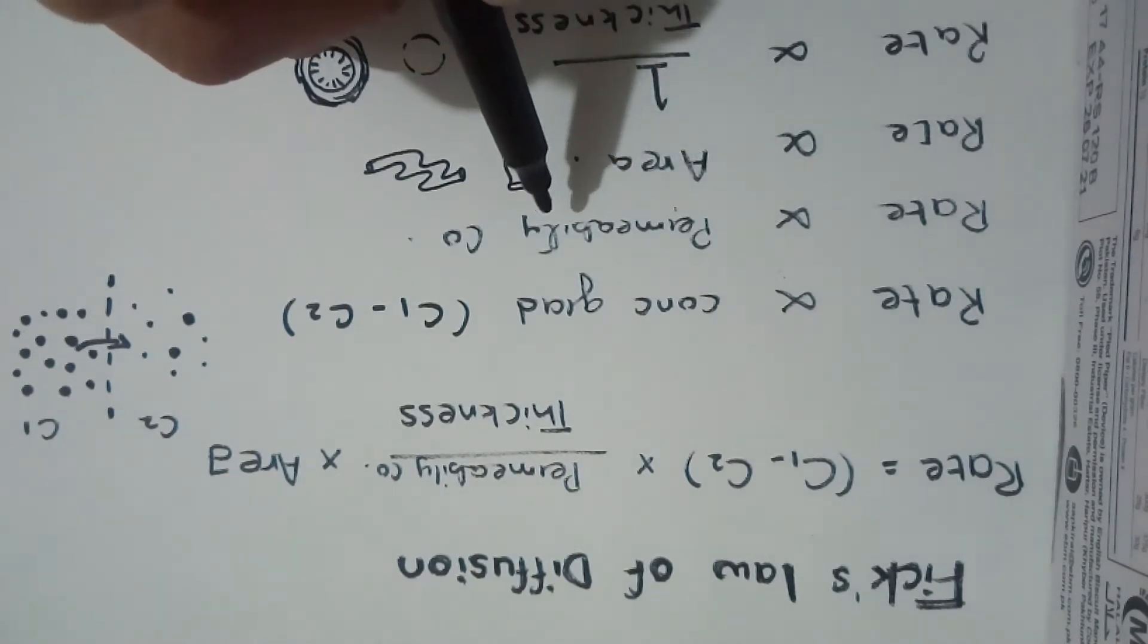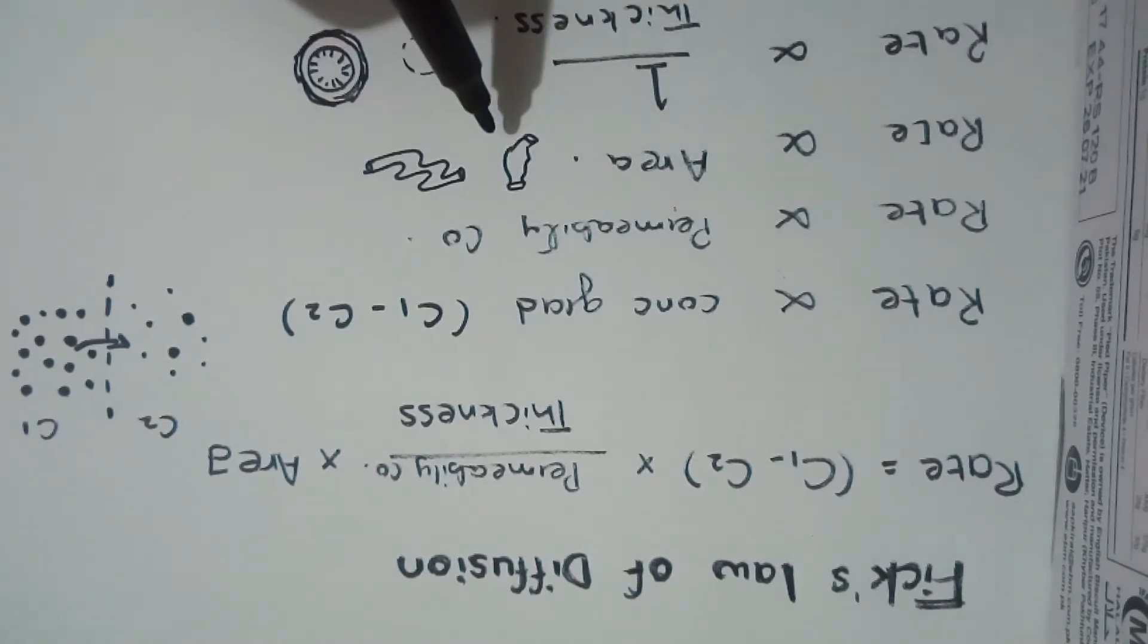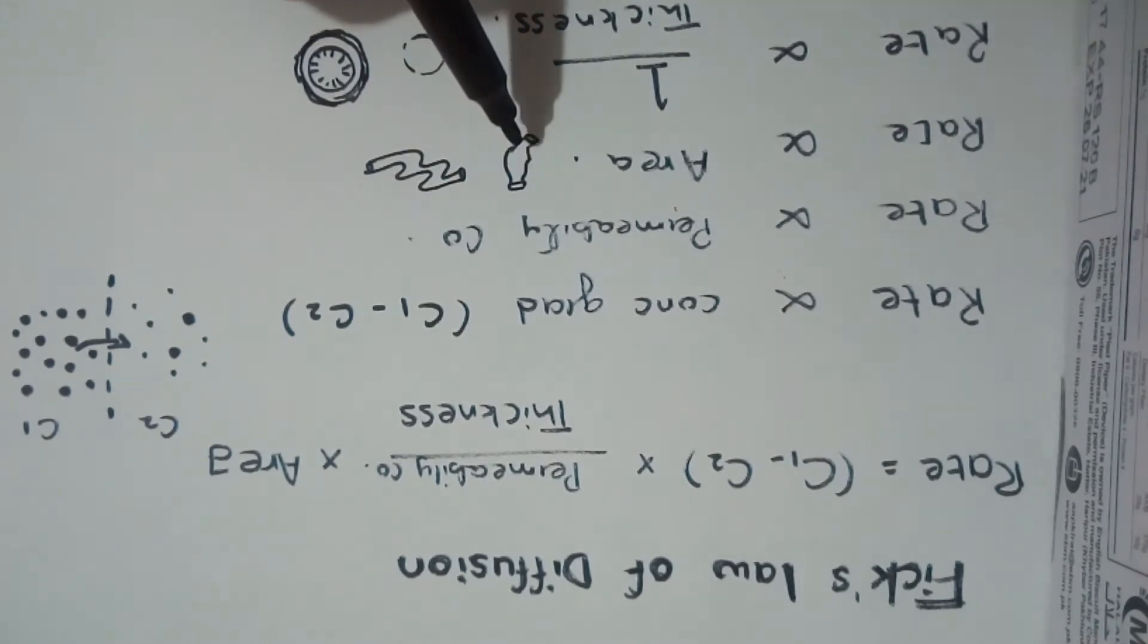Thirdly, the drug absorption is faster from organs with large surface area, for example the intestine, but it would be a bit lower with organs that have a small surface area, for example the stomach. Furthermore, the drug absorption is faster from organs that have thin membranes.